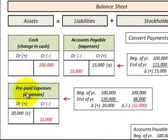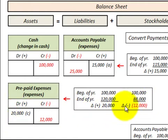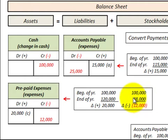Looking at prepaid expenses: where we had a $20,000 increase — beginning balance $100,000, ending balance $120,000 — we debit or increase our prepaid expenses by $20,000. Where we had a reduction of $12,000 — beginning balance $100,000, ending balance $88,000 — we credit or reduce our prepaid expenses by $12,000.